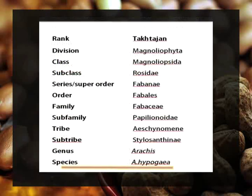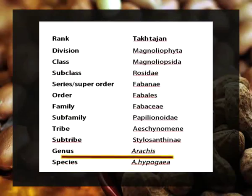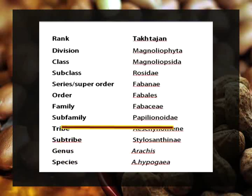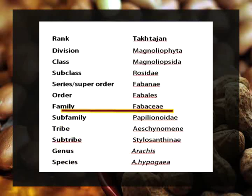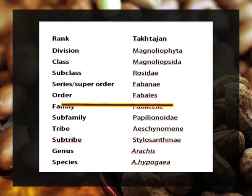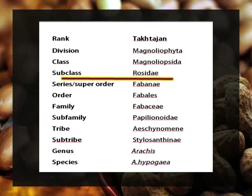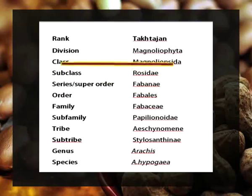Takhtajan classified Arachis hypogaea into genus Arachis, sub-order Stylosanthinae, tribe Aeschynomeneae, sub-family Papilionoideae, family Fabaceae, order Fabales, sub-order Fabanae, sub-class Rosidae, class Magnoliopsida, and division Magnoliophyta.